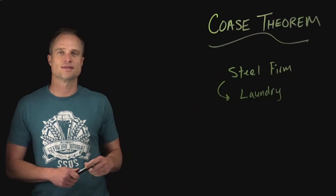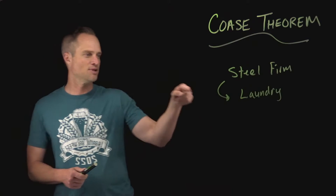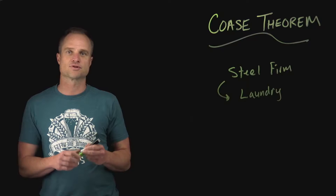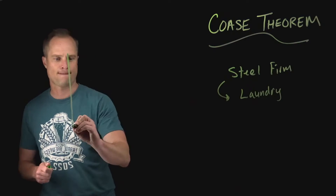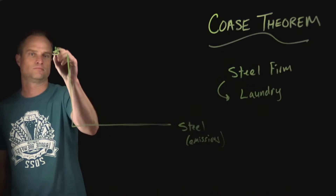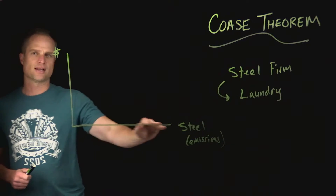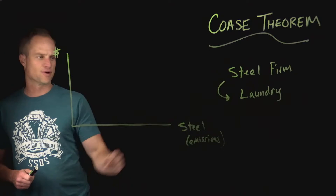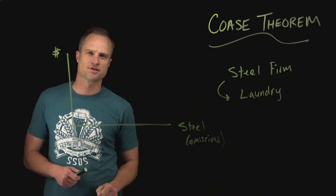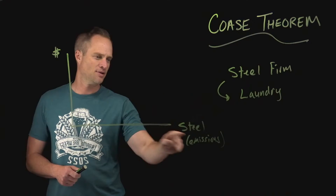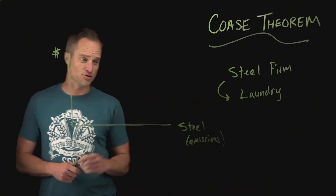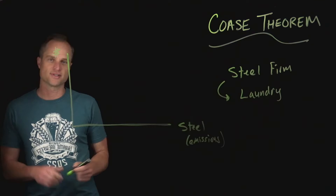In a previous video we looked at the externality between these two firms using a numeric example, and today I'm just going to use a graph. On the horizontal axis we have the production of steel, which indirectly is causing emissions — that's what we really care about — but it's the quantity of steel that the firm is deciding to produce to maximize its profits.